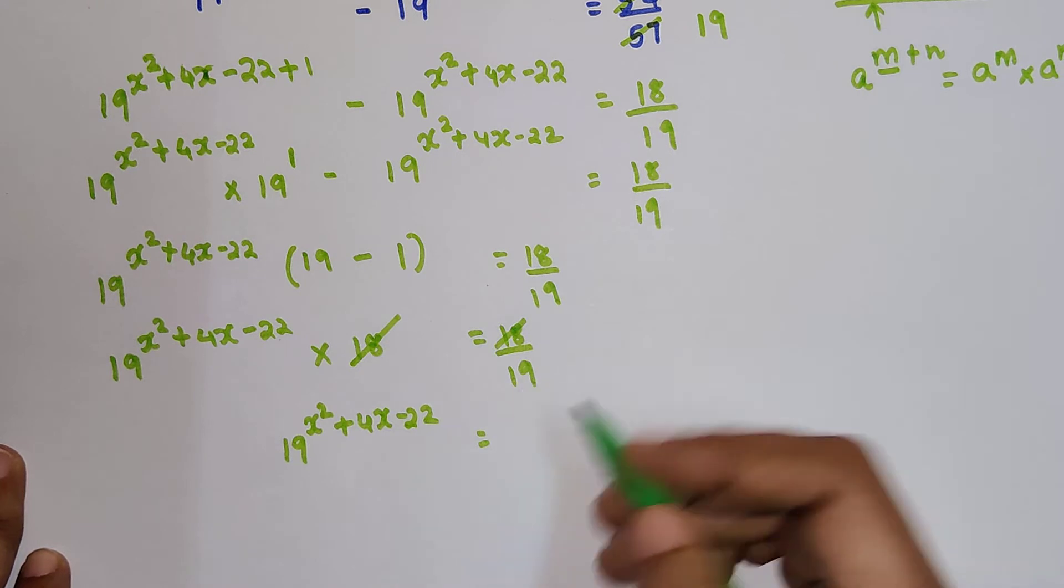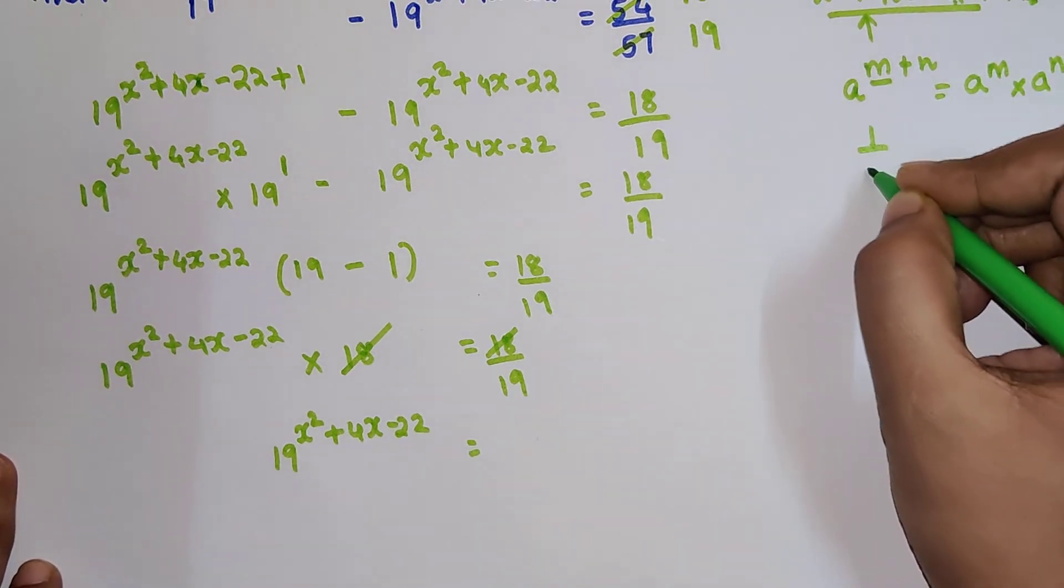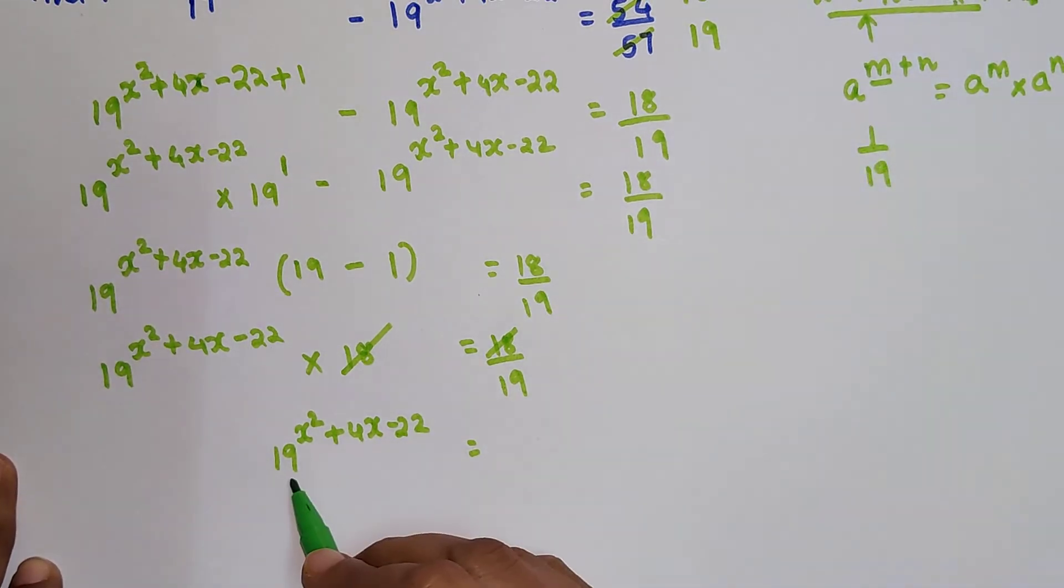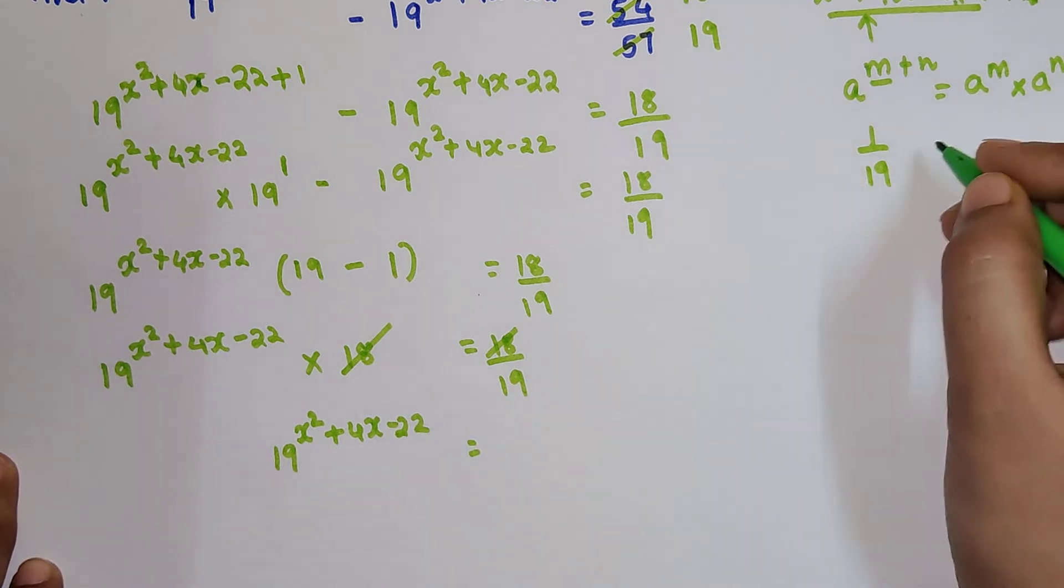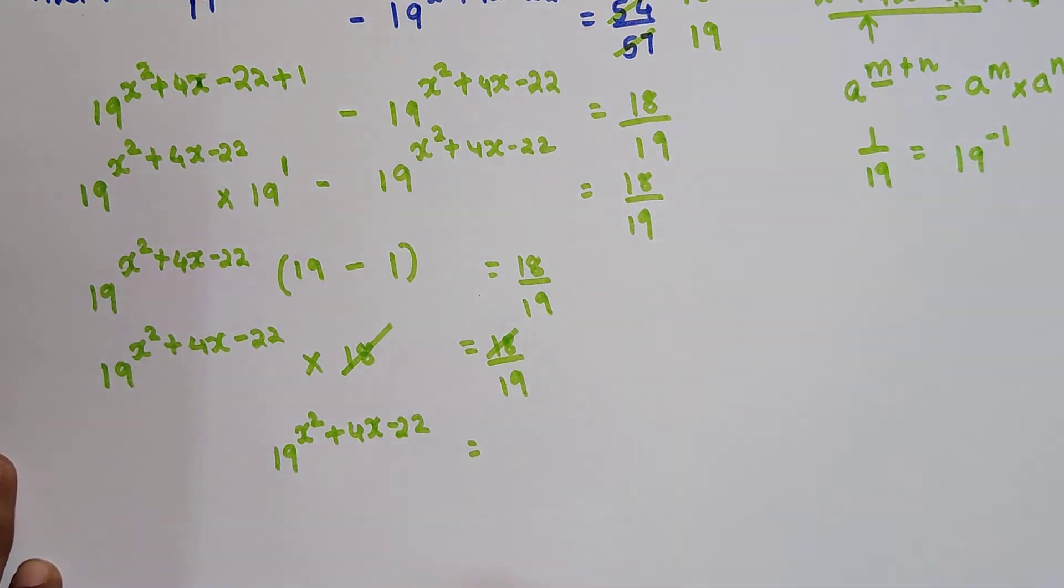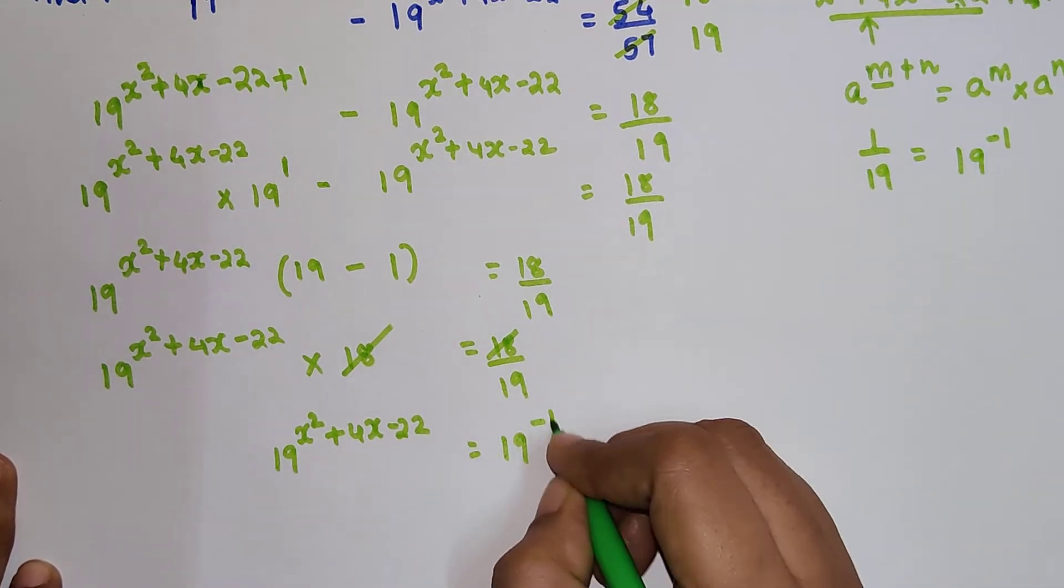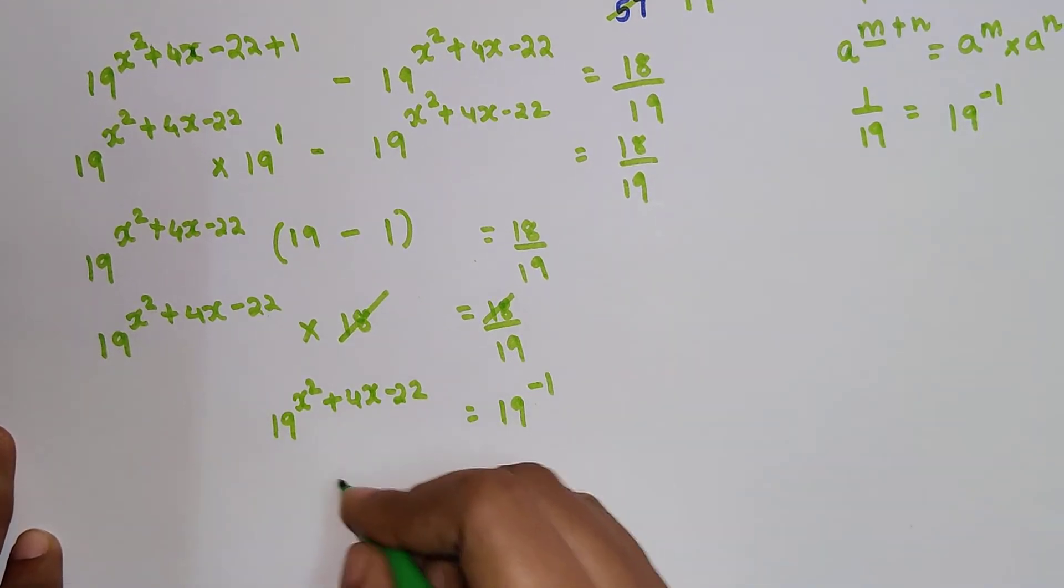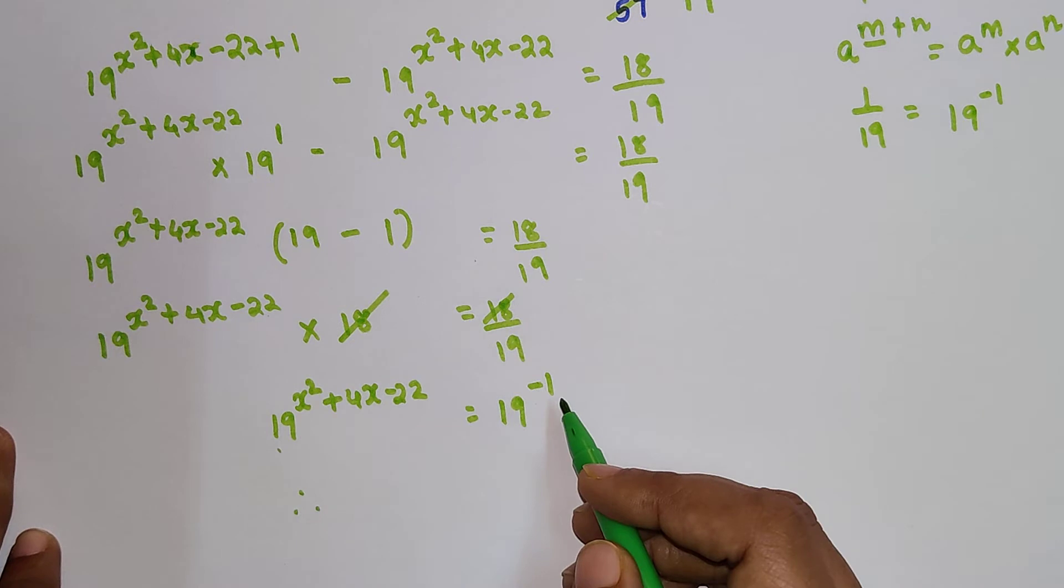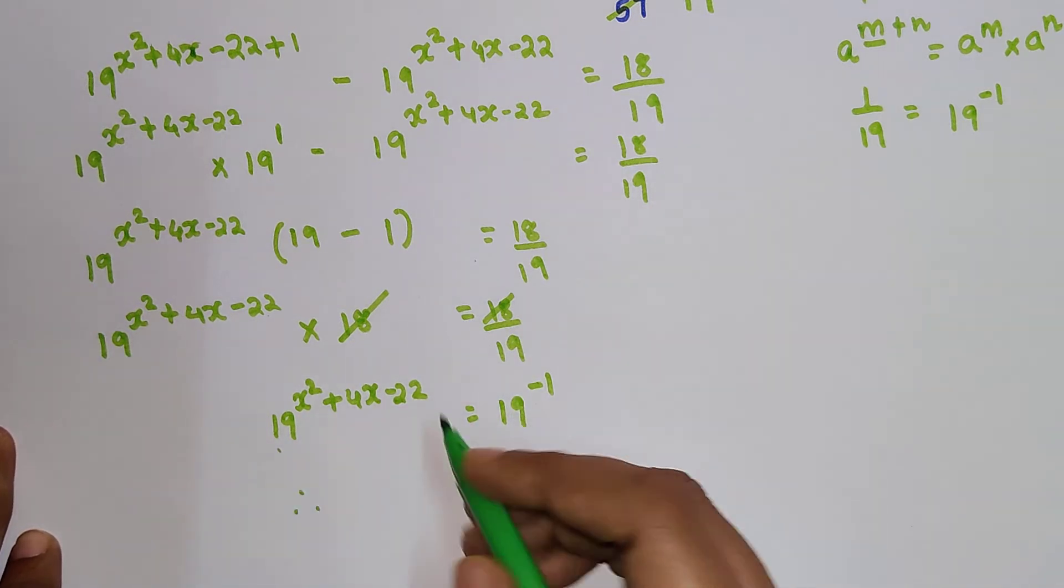Now we have 1/19. But if I want everything in terms of base 19, I can write this as 19^(-1). Therefore, I can say the bases are the same, so I can equate the indices to find the value of x.